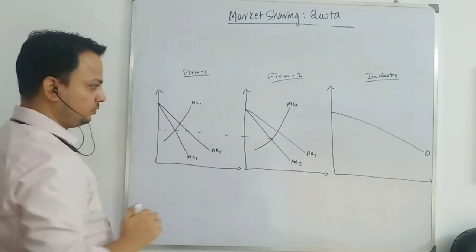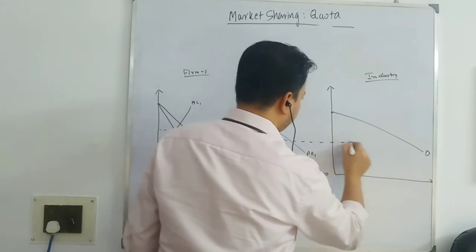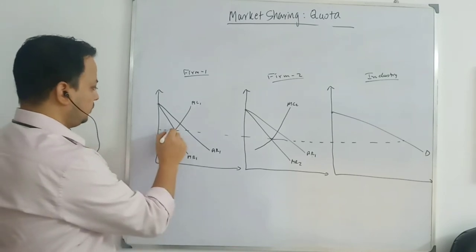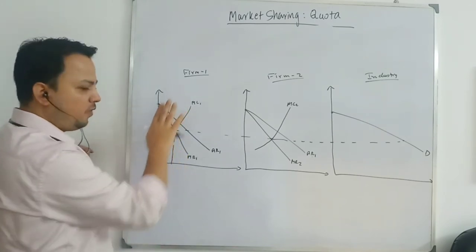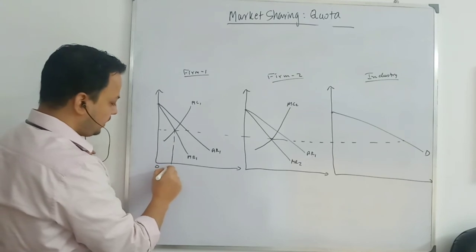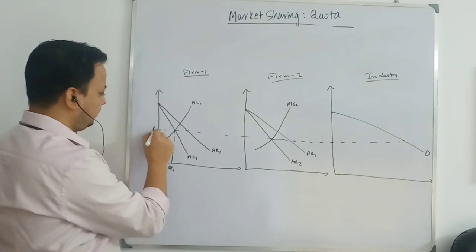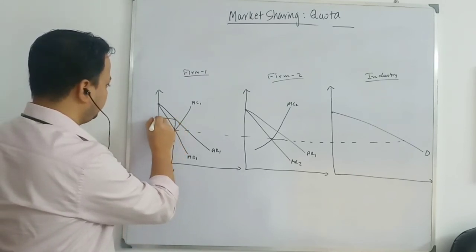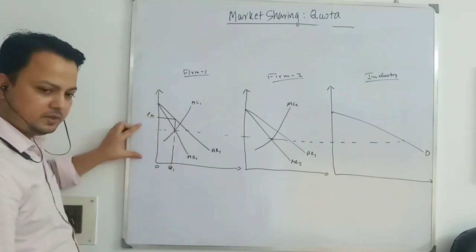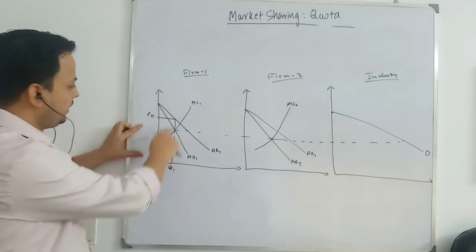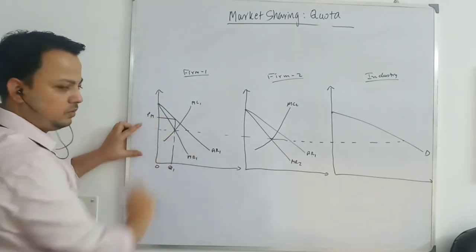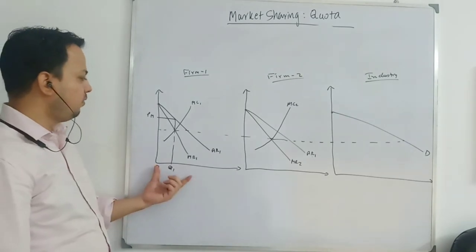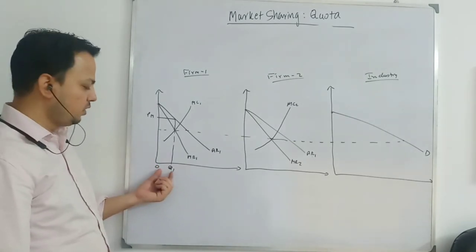Draw the curve the same for both firms. Now extending this: when I look at firm one independently, this firm will be producing OQ1 output and charging price OPM, where MR equals MC. Price will be read from the demand curve AR1. Similarly firm two will produce OQ2 output with the same equilibrium.